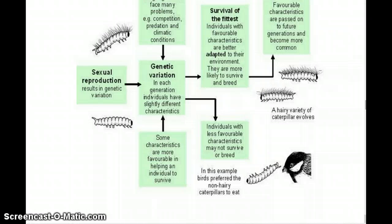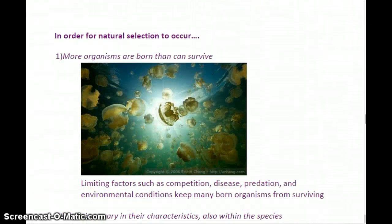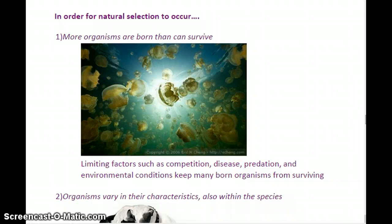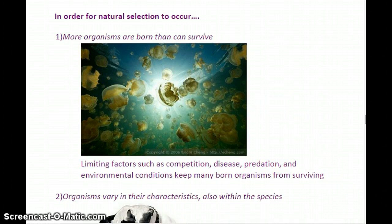I like to say that it's not really about survival as much as it is about reproduction. It doesn't matter how long an organism survives; it matters if it breeds and passes on its genes. So really it should be 'reproduction of the fittest.' In order for natural selection to occur in a population, a few conditions have to be met. First, more organisms are born than can survive in those conditions.